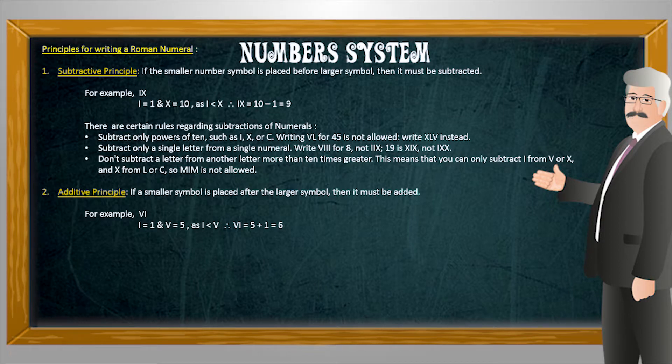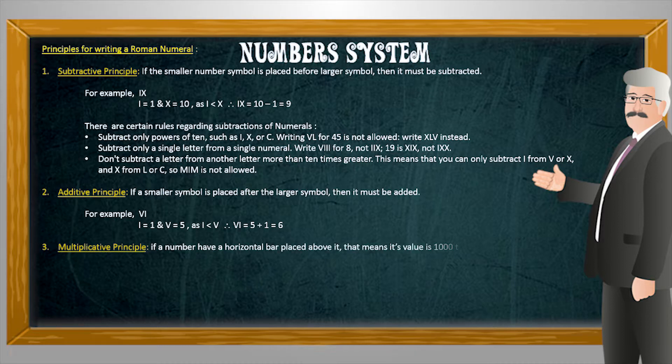Third principle is the multiplicative principle which states that if a number have a horizontal bar placed above it, it means it's one thousand times the number. For example, if a horizontal bar is present over symbol V, it means one thousand times the value of V, that is five into one thousand which is equal to five thousand.